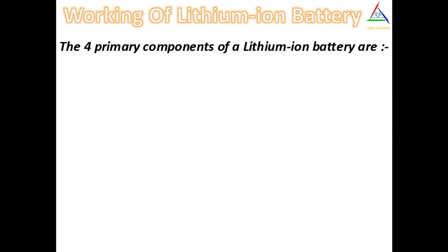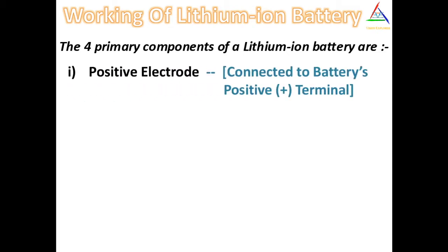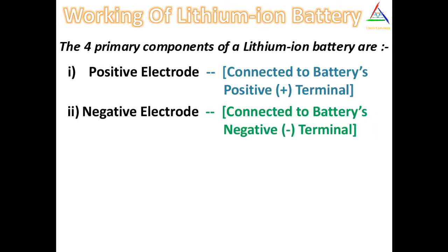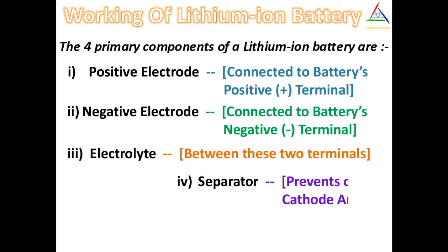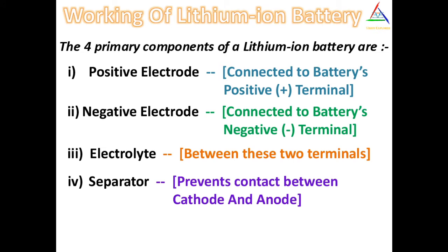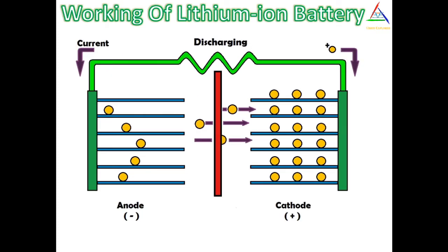Firstly, let's talk about their working. There are four primary components of a lithium ion battery: the positive electrode, which is connected to the battery's positive terminal; the negative electrode, which is connected to the battery's negative terminal; the electrolyte, which is between these two terminals; and the separator, which prevents contact between cathode and anode. The positive electrode is commonly made from lithium cobalt oxide and the negative electrode is made from carbon.